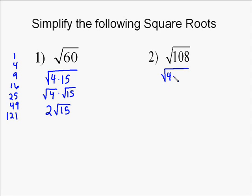Same thing on the other one. We're going to factor into the perfect squares. So we first factor 4 out of 108, so you end up with 4 times 27.